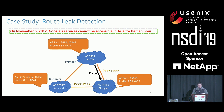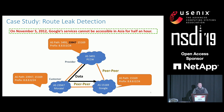another Google peer, Moreto, could also advertise its AS path to its provider, PCCW. PCCW then selected this route as the preferred one destined to Google, because by forwarding traffic through its customer, it can generate revenue. As Moreto could not handle such large traffic volumes, Google's services could not be accessible in parts of Asia for half an hour. If PCCW knows it's a route leak, it can avoid selecting this route. So how can we detect such route leaks?